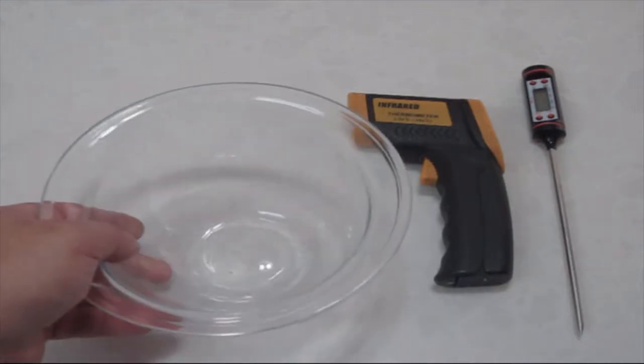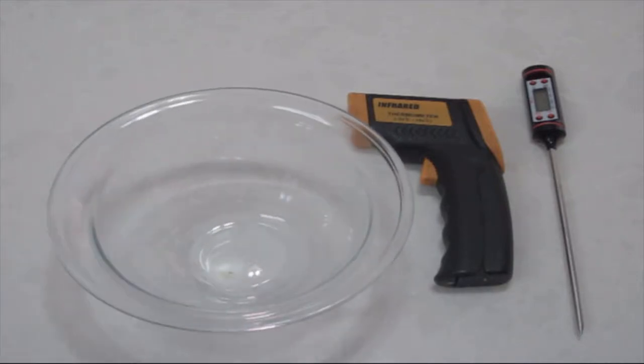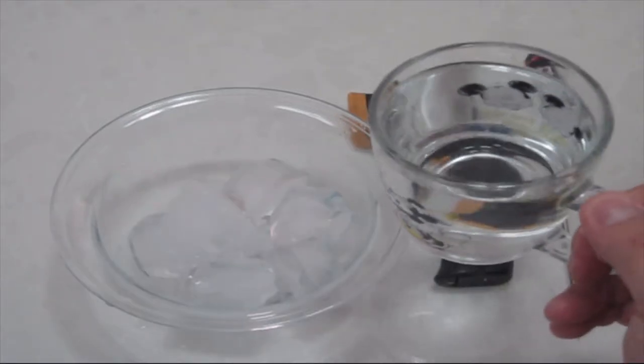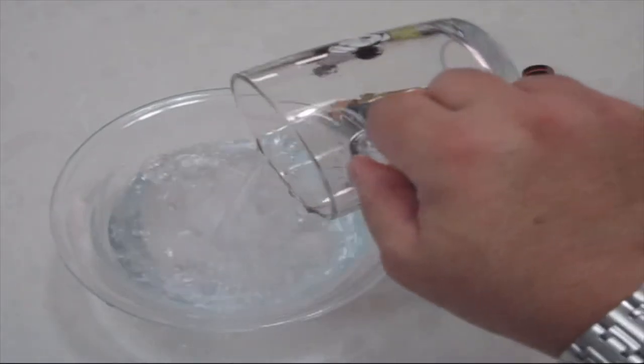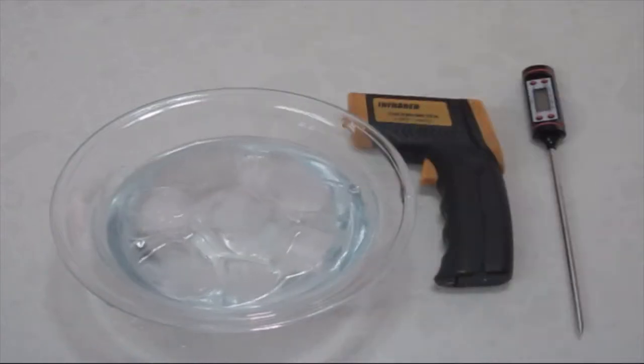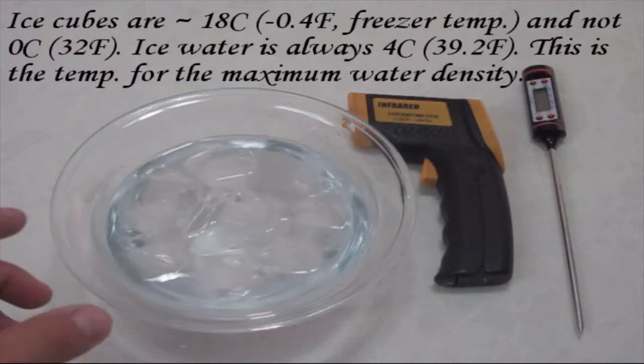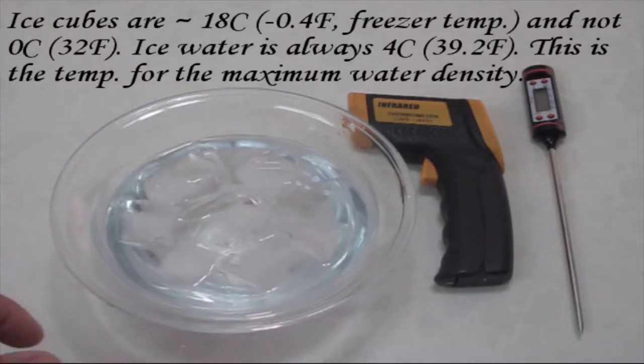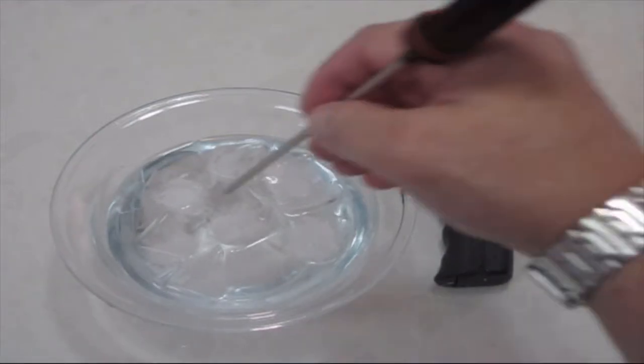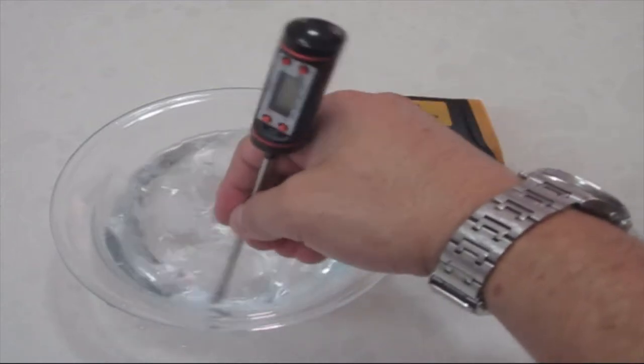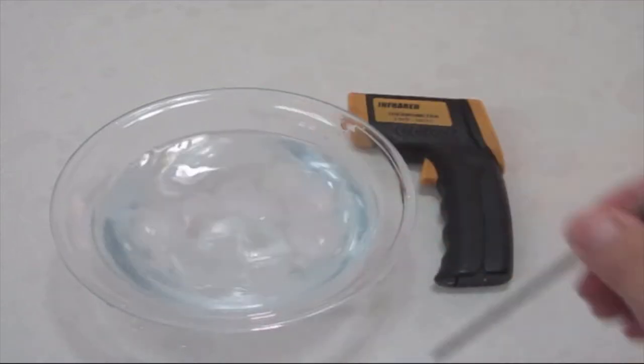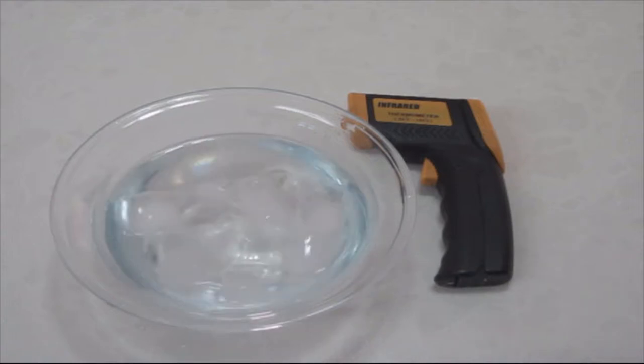So how do you do that? Well let's get started. I have a bowl here. We're going to put some ice in it and then we're going to start measuring. Let's put some water in there as well because the temperature of the ice is not zero degrees Celsius. And we'll just stir it lightly.